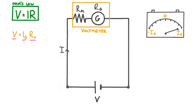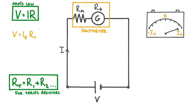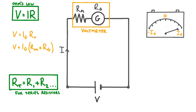It's useful to remember that for resistors connected in series, the total resistance is given by the sum of the individual resistances. This means that the total resistance of our voltmeter is equal to the resistance of the multiplier resistor plus the resistance of the galvanometer — in other words, Rv equals Rm plus Rg. So overall we can write V equals Ig times (Rm plus Rg). This is a really useful formula that tells us the voltage range that our voltmeter can measure based on the full deflection current of the galvanometer, the resistance of the multiplier resistor, and the resistance of the galvanometer.